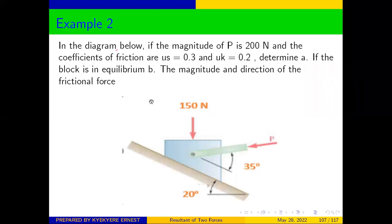In the diagram below, the magnitude of the force P is 200 newtons. The coefficient of static friction is μs = 0.3 and the coefficient of kinetic friction is μk = 0.2. Determine: (a) if the block is in equilibrium, the magnitude and direction of the frictional force.